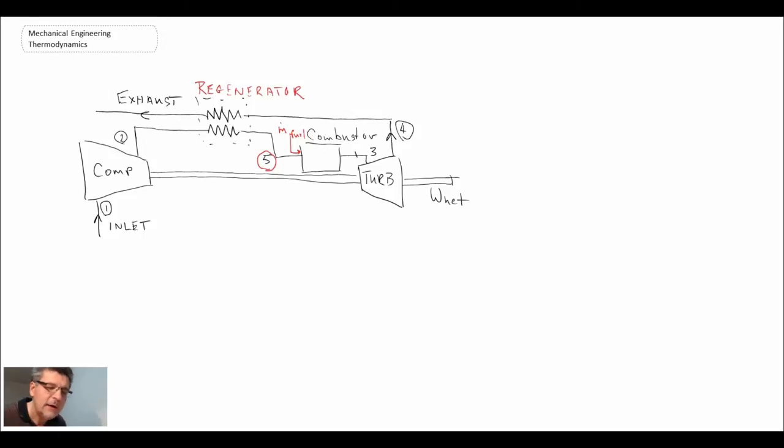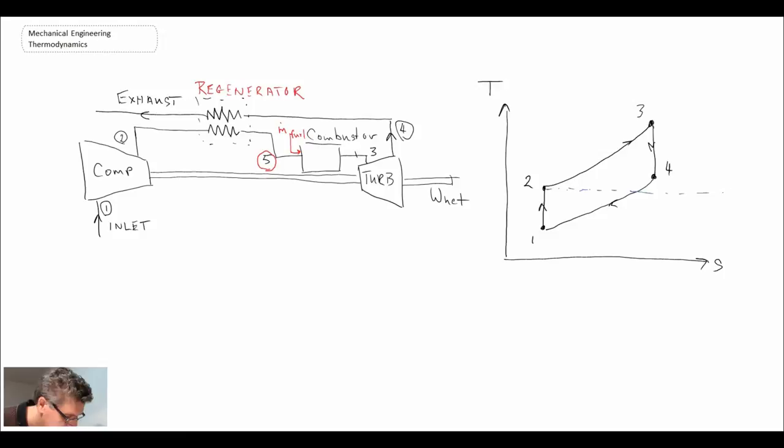Now taking a look at the TS diagram. I've drawn two horizontal lines to denote the temperature of the exhaust when it's coming out. So it's state 4 and we draw this line here, which will be indicated by state 5 prime. In an ideal world, if our regenerator was 100% effective, the compressed air from state 2 would move all the way up to state 5 prime.